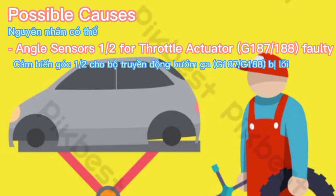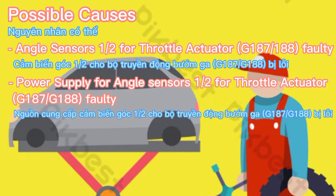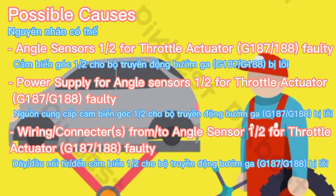Angle sensors 1/2 and 4 throttle actuator G187 and G188 faulty. Power supply for angle sensors 1/2 and 4 throttle actuator G187 and G188 faulty. Wiring and connectors from/to angle sensor 1/2 and 4 throttle actuator G187 and G188 faulty.